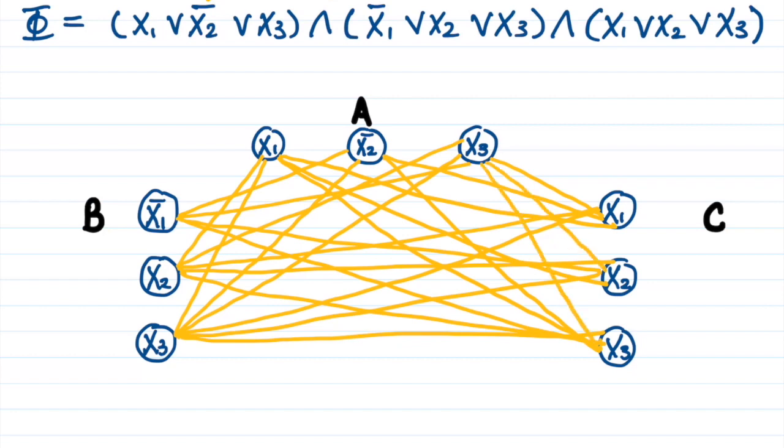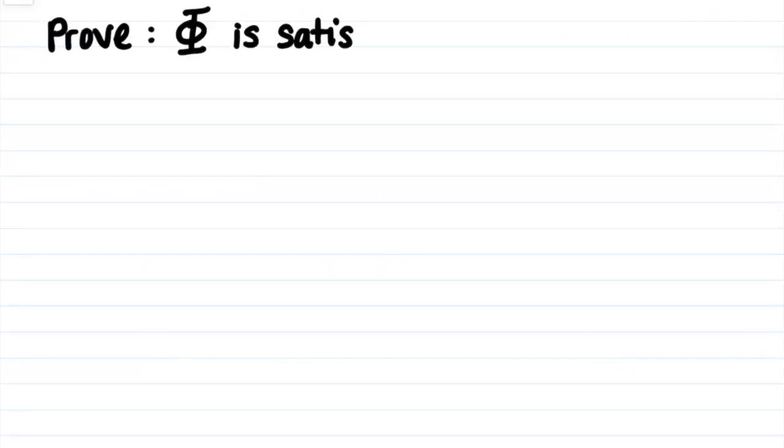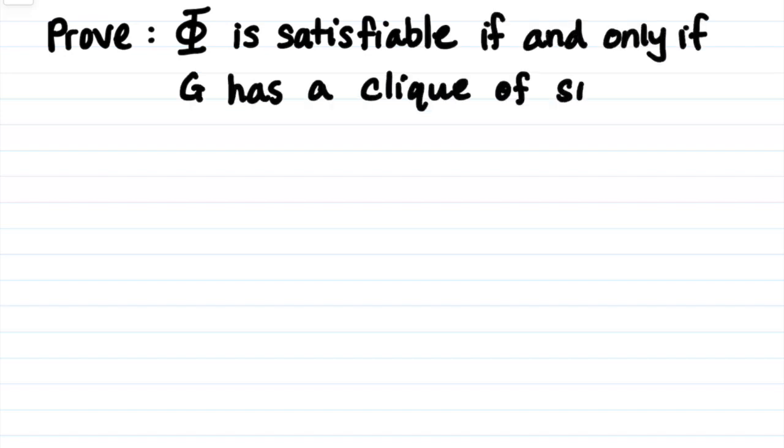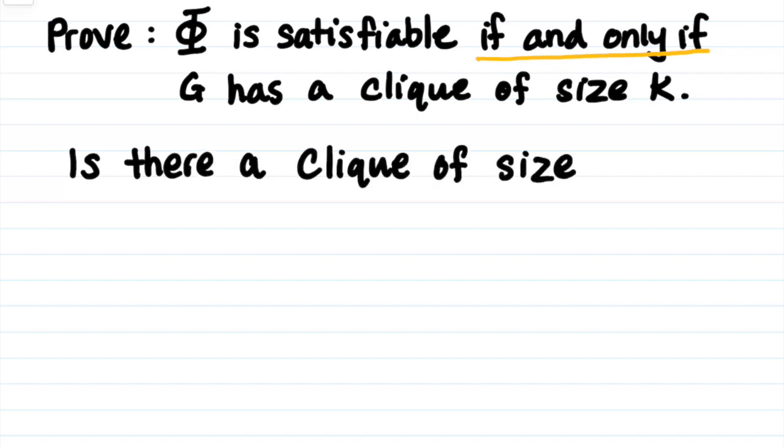So, a very important step is to prove that phi is satisfiable if and only if G has a clique of size k. Since this is an if and only if statement, which means that we need to prove implications in both directions. There are three clauses. So the question we are going to ask or decide for our graph is, is there a clique of size 3 on the graph?